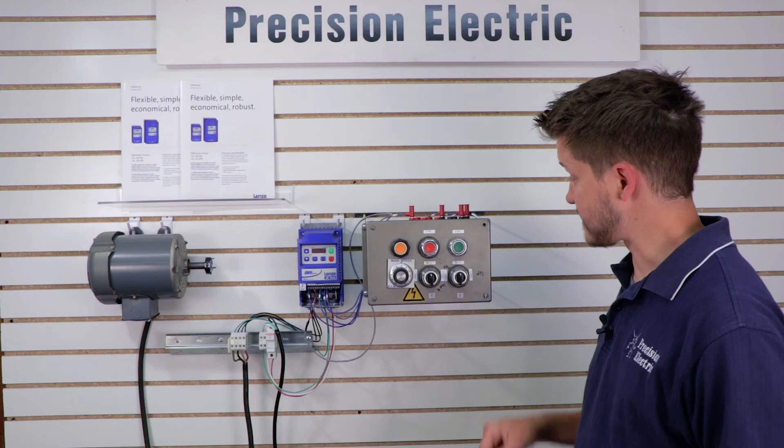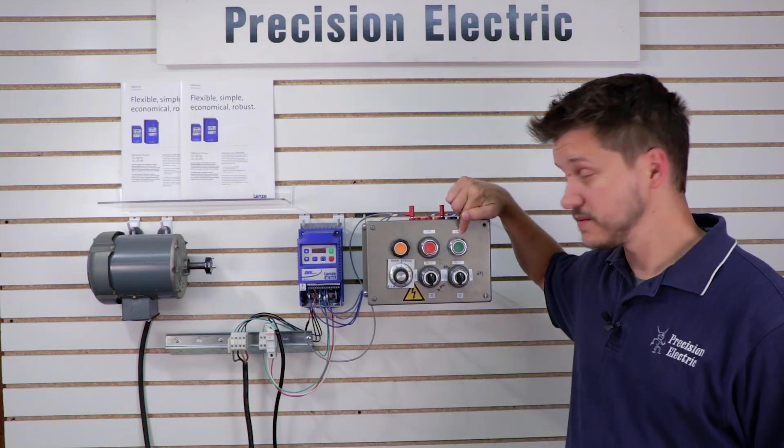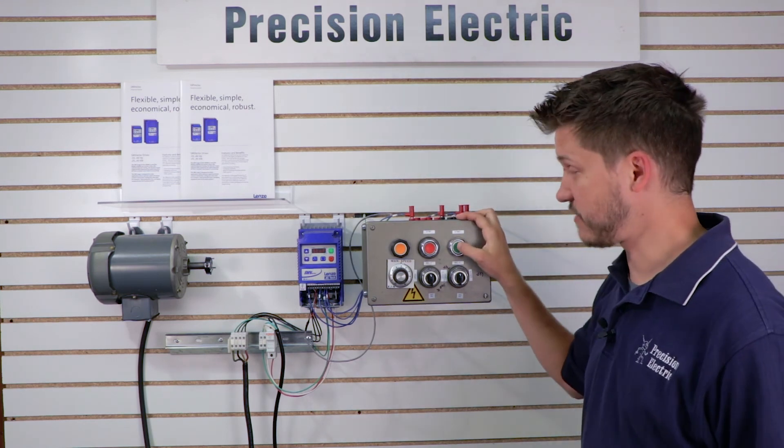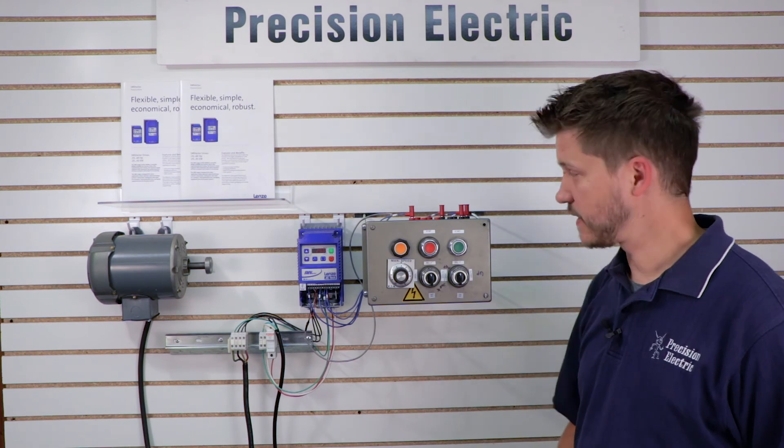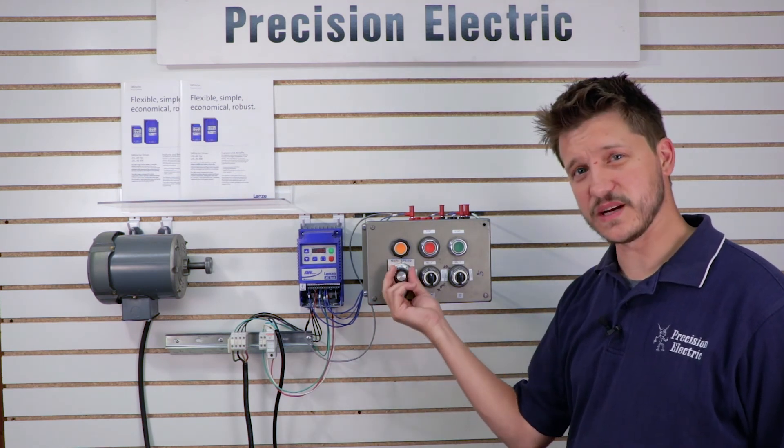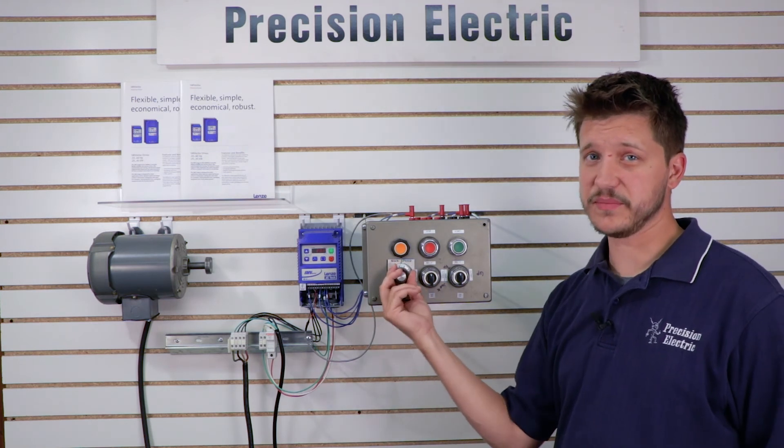So let's go ahead and run it. As I said before, this is my forward button, and this is my stop button, and this is my reverse button. Now if I press in my forward button, the motor starts running forward, and it runs forward at whatever speed I have it set to. Right now, I've got my speed set up for my speed pot, so I can turn it up and down as I want.